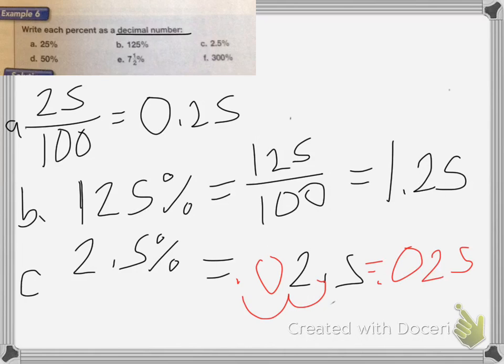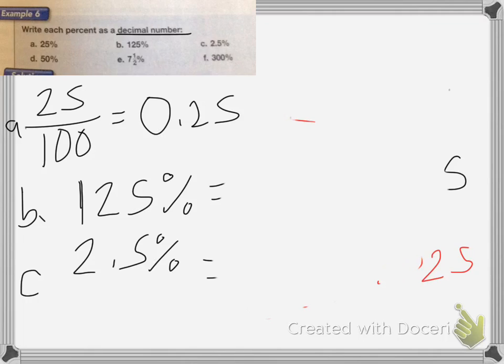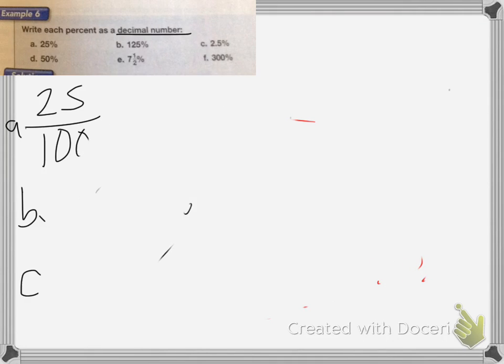That's the quick way to do it instead of dividing a fraction. So for D, 50%, it's going to equal 50 divided by 100, which means we move the decimal place two places to the left, so it's going to be .5.